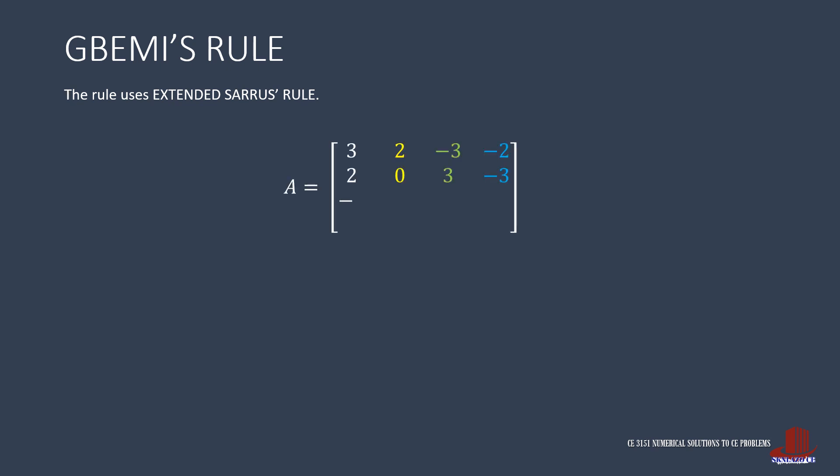Another shorter determinant method is Jibemis, which is presently only used for 4x4 matrices. The method is very similar to Zara's rule with a few tweaks, and is thus also called Extended Zara's rule. Since this method has just been approved recently, it applies only to 4x4 matrices, though there would probably be more innovations for bigger matrices later.